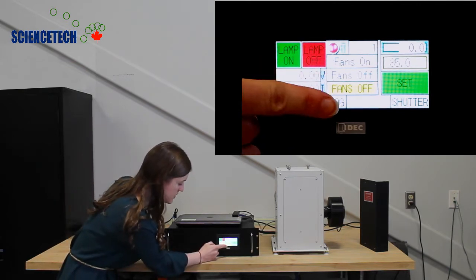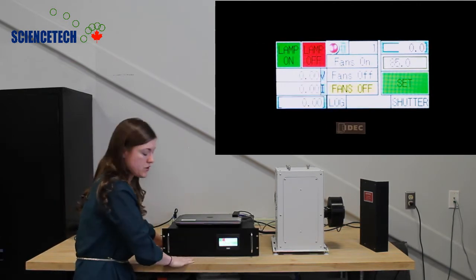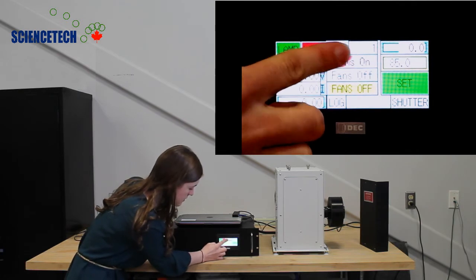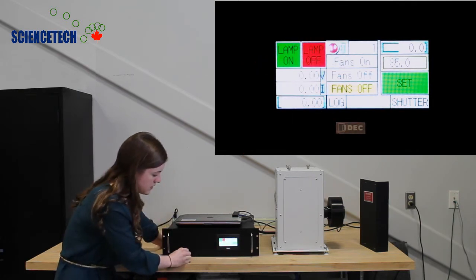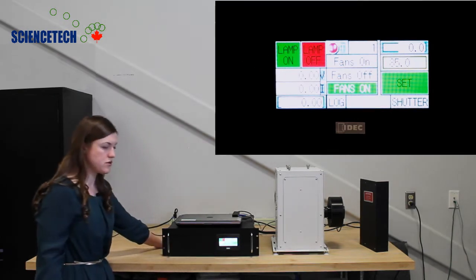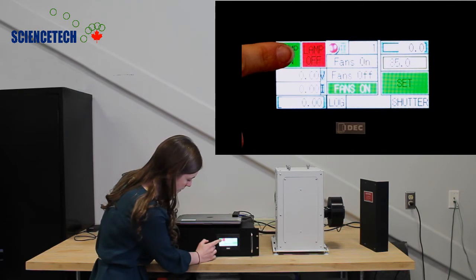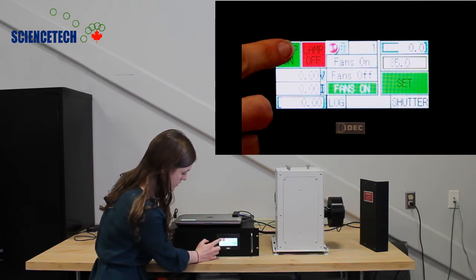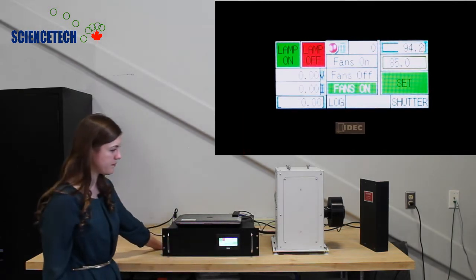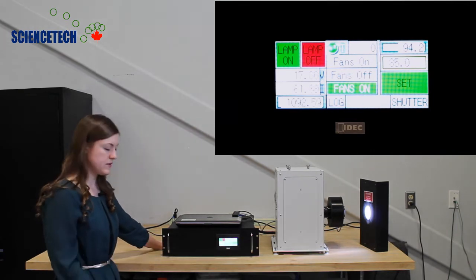The first thing that you should do when you're going to turn the lamp on is turn on the fans. So you hit fans on and the fan monitor changes to fans on. And then you can turn on the light source by hitting lamp on. You can see the lamp is initialized.